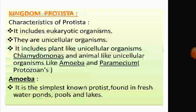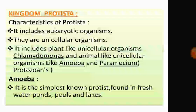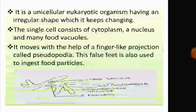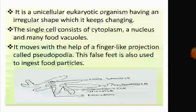The characteristics of Protista are that they are unicellular organisms and eukaryotic, meaning they have a well-defined nucleus. Amoeba is the simplest known protist. It is a unicellular eukaryotic organism found in freshwater ponds, pools, and lakes. Amoeba has an irregular shape that keeps on changing.